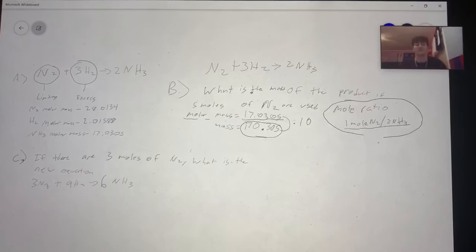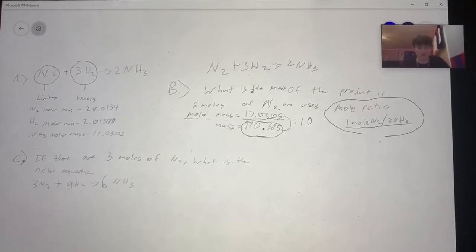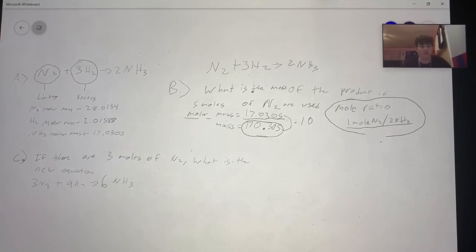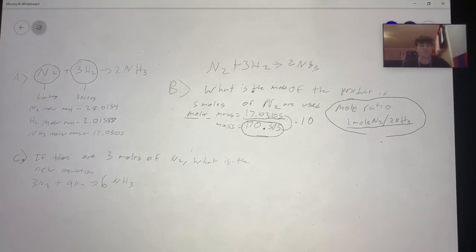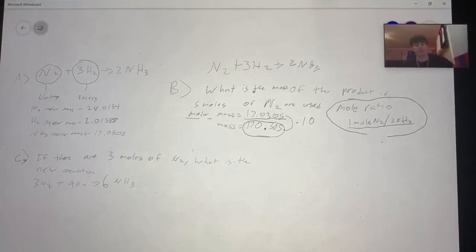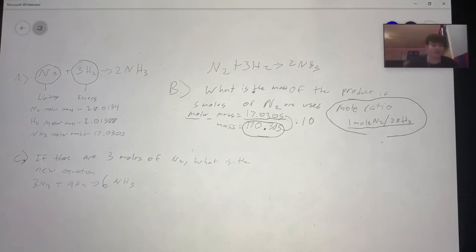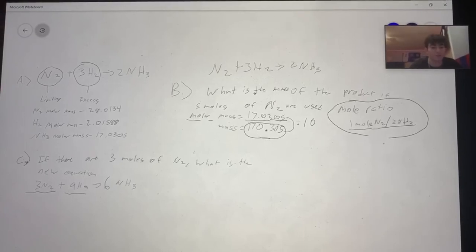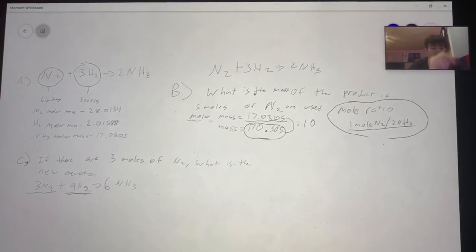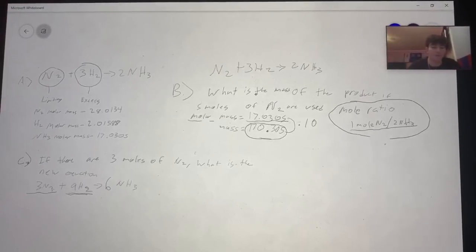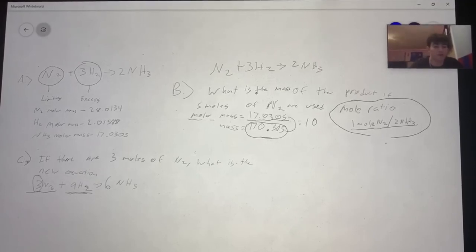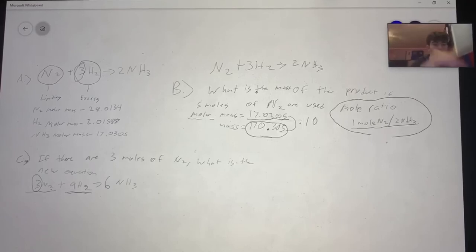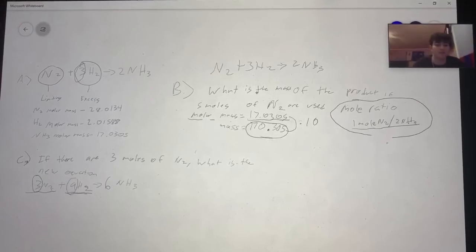For part C, you're going to find out if we use three moles of N2, what will the new equation become. The mole ratio of N2 to H2 is one to three. Therefore we must multiply this coefficient, which is three, by three to equal nine.